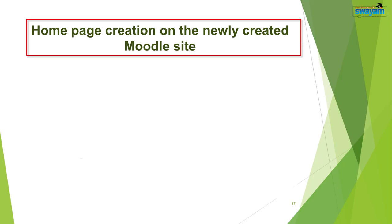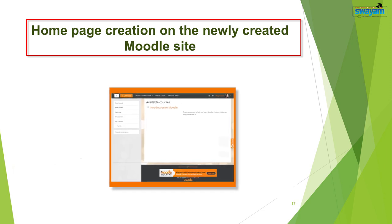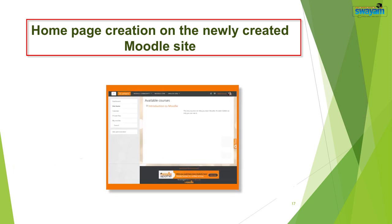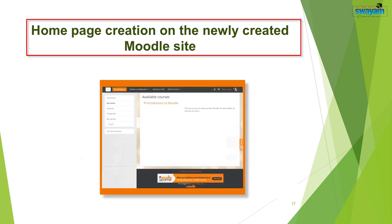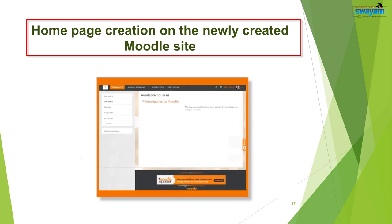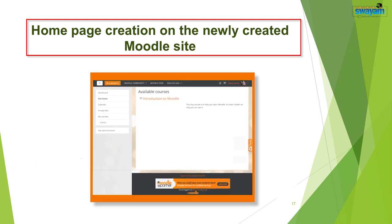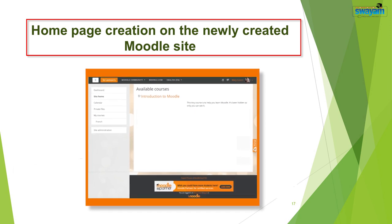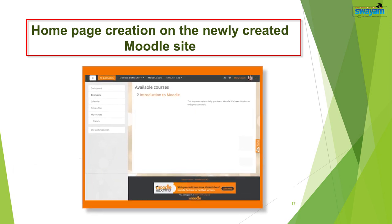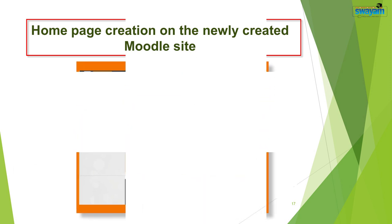Homepage creation of the newly created Moodle site. After the creation of the Moodle site, you are to design your home page. The URL of the newly created Moodle site is ready for use. When opening this site, enter the specific URL address of your site, like www.rohthak.moodlecloud.com or whatever name you have given. After accessing the site, enter the username and password.